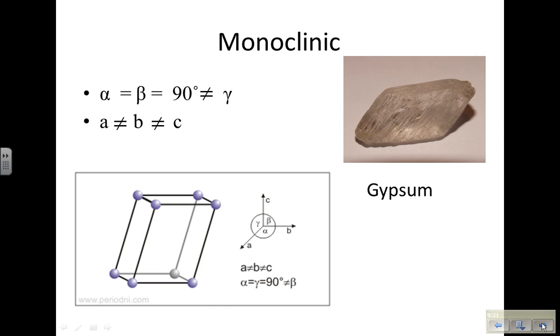In a monoclinic crystal, your alpha and beta are 90 degrees, and they are not equal to your gamma. To notice which is alpha, beta, and gamma: your alpha is the angle between A and B, your beta is between B and C, and your gamma is between A and C. None of your sides are equal in length in a monoclinic. The mineral gypsum expresses this crystal shape.